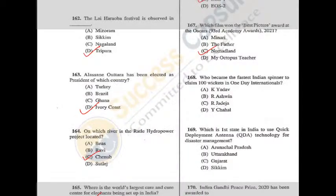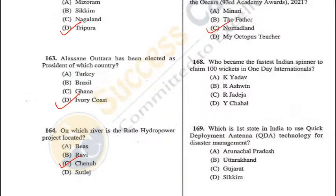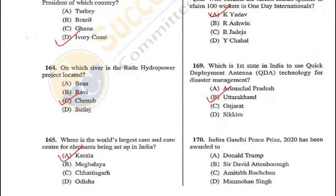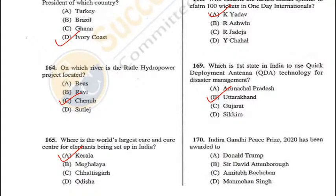Question 168: Who became the fastest Indian spinner to claim 100 wickets in One Day Internationals? Kuldeep Yadav, in the second match against Australia in Rajkot — A is the answer. Question 169: Which is the first state in India to use quick deployment antenna technology for disaster management? Uttarakhand — B is the answer. Question 170: Indira Gandhi Peace Prize 2020 was awarded to David Attenborough — B is the correct answer.